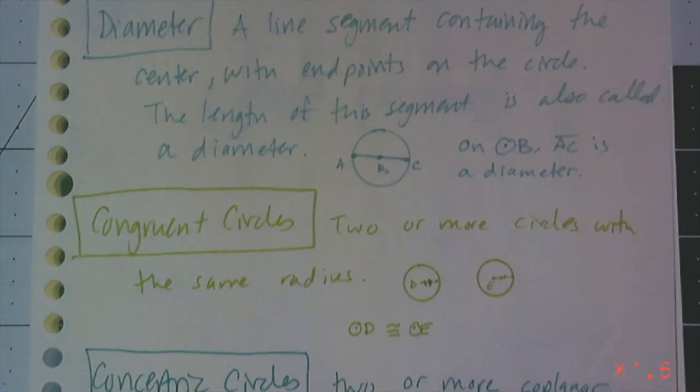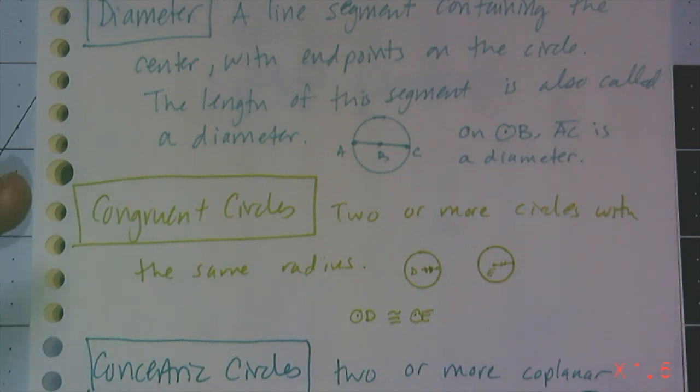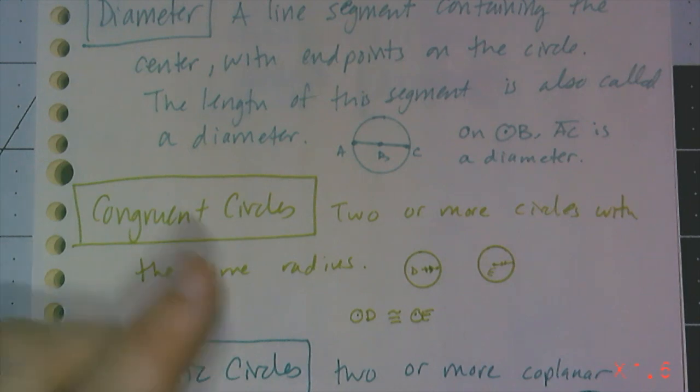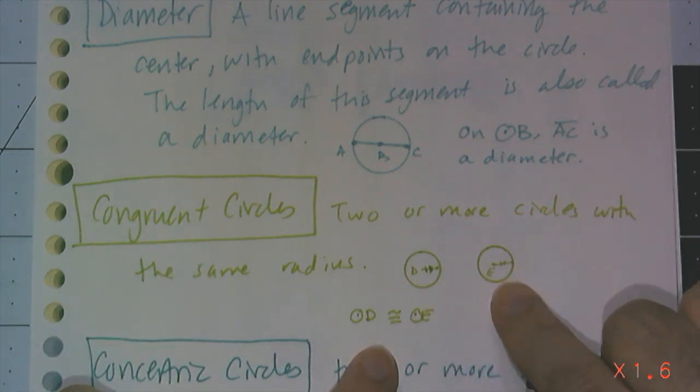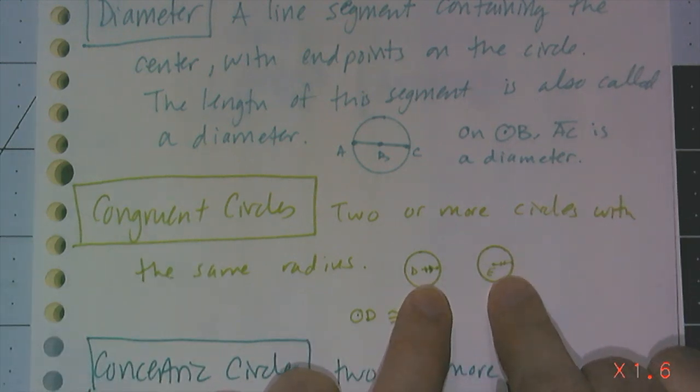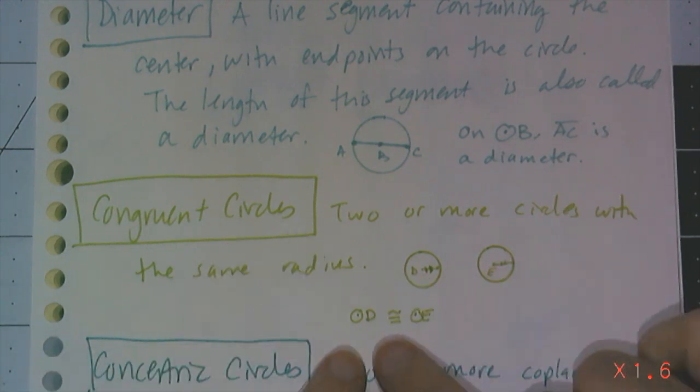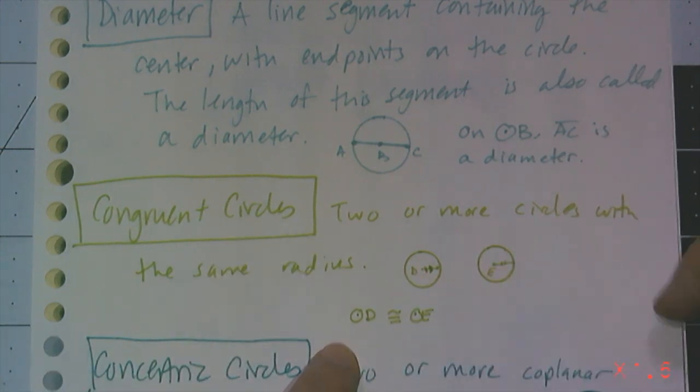Now of course, I can have congruent circles, but two or more circles are congruent only if they have the same radius. So I have circles D and E, and their radii are marked with two little tick marks each. That means circle D is congruent to circle E.